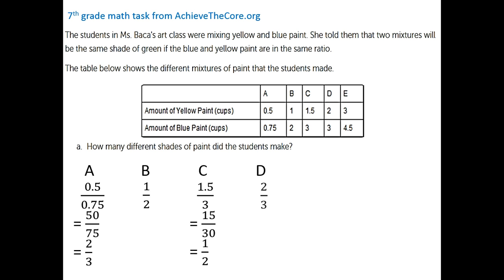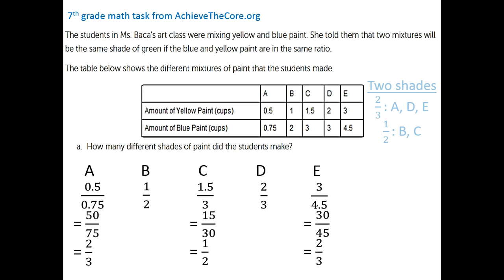Student D has a ratio of 2 to 3 for yellow to blue, identical to student A. Student E has a ratio of 3 to 4.5. Multiplying numerator and denominator by 10 and then dividing by 15 gives a ratio of 2 to 3. So students A, D, and E have a ratio of two cups of yellow to three cups of blue, and students B and C have a ratio of one cup of yellow to two cups of blue — meaning there are two different shades.